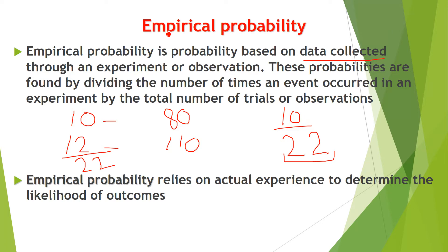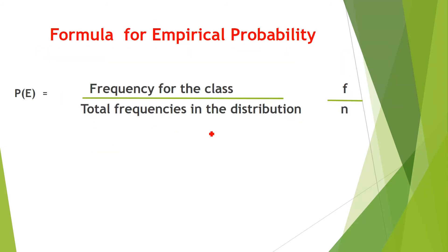Empirical probability relies on actual experience to determine the likelihood of outcomes. It does not depend on estimation or approximation. The formula is: P(E) = frequency for the class divided by total frequencies in the distribution. For example, 10 patients had blood pressure 80 out of 22 total observations, so the probability is 10 over 22.